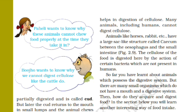Animals like horses and rabbits have a big sack-like structure called the caecum, located between the esophagus and the small intestine. The cellulose of the food is digested here by the action of certain bacteria, which are not present in humans.